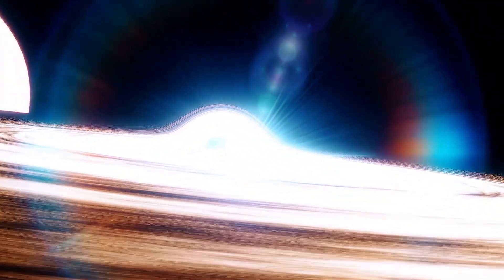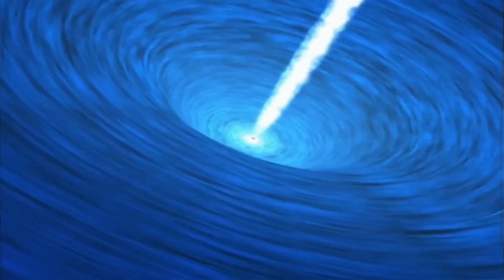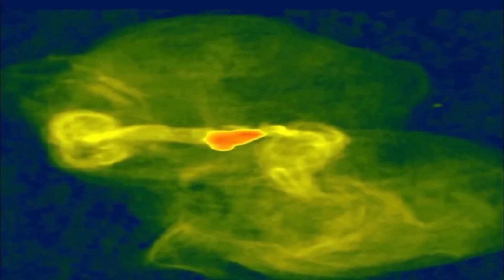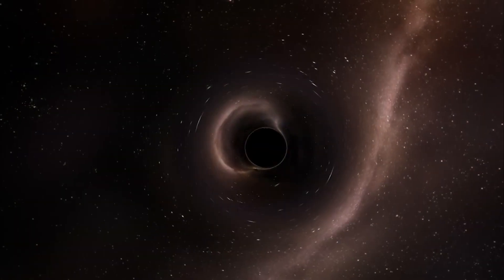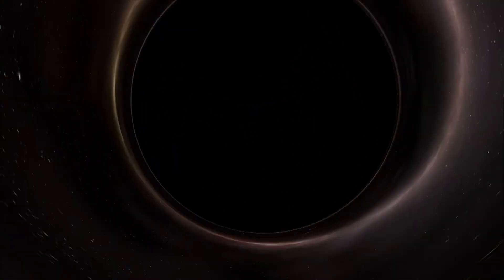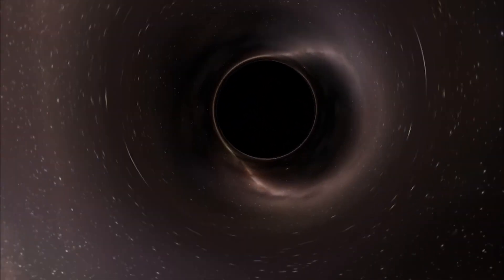The distinguishing feature of a white hole is that it only allows matter and energy to flow outward. Nothing can cross its event horizon from the outside to the inside, which distinguishes it primarily from black holes. In theoretical discussions of white holes, intriguing questions have arisen about their temporal properties. For example, it has been speculated that the flow of time inside a white hole could be reversed, raising scenarios that challenge our conventional understanding of causality.